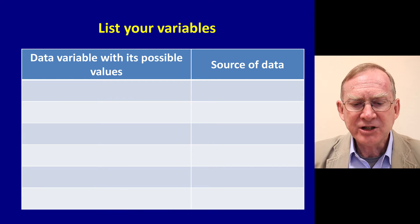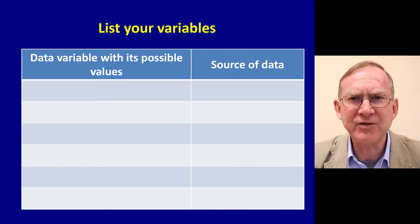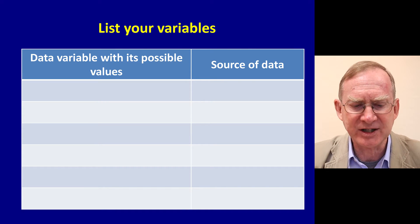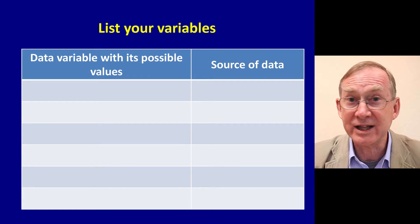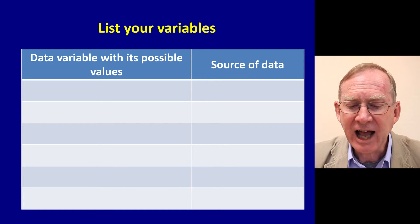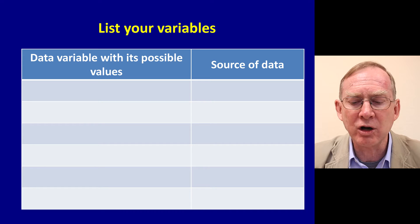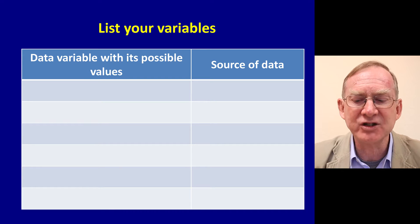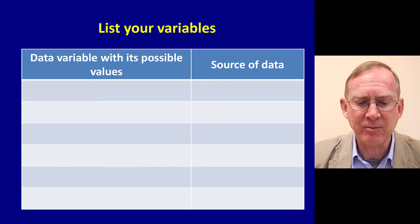When you come to listing your variables, it's very useful to have a table like this. You put the data variable down with its possible values and you indicate on the right-hand column where the source of that data might come from.